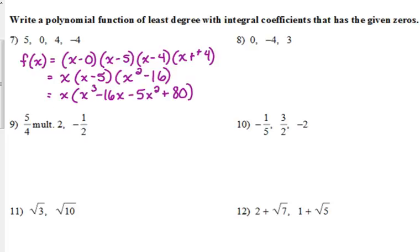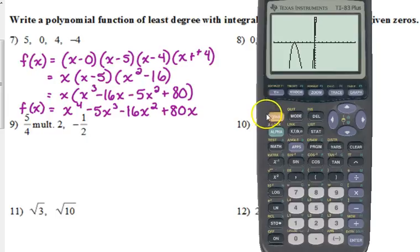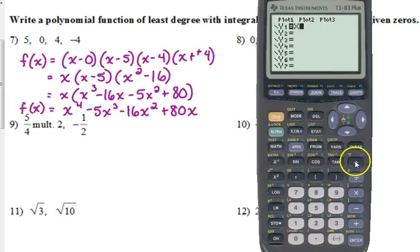And then last step, we distribute that x to everything and I'm going to put it in standard form. So x times x cubed is x to the fourth. x times negative 5x squared is negative 5x cubed. x times negative 16x is negative 16x squared. And x times 80 is 80x. So that is our function. So the cool thing about this is we can definitely check our work. All we have to do is go in and type in our polynomial.